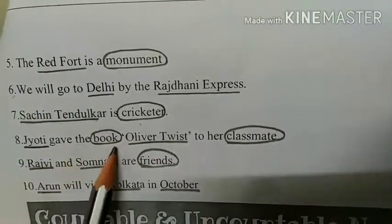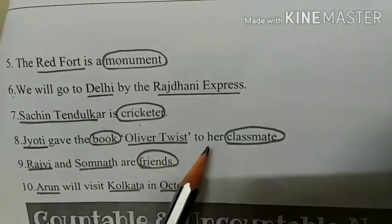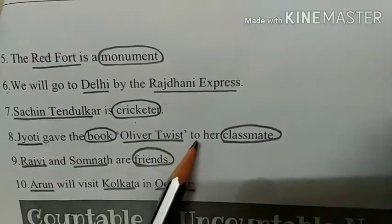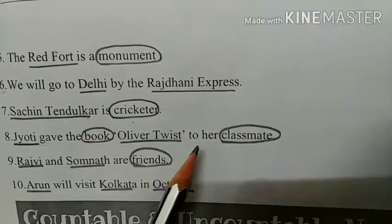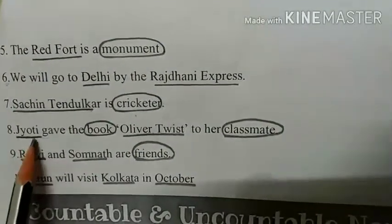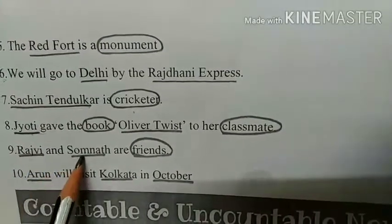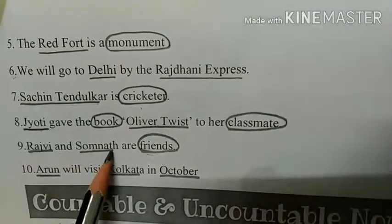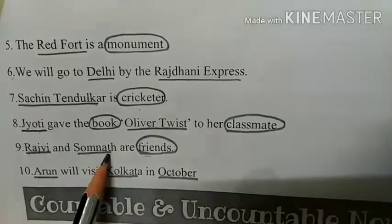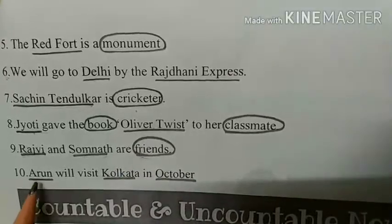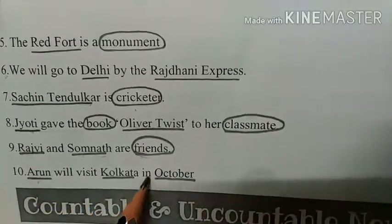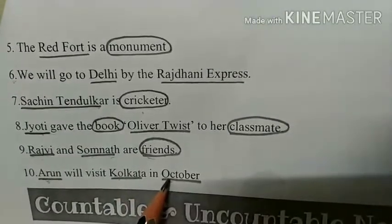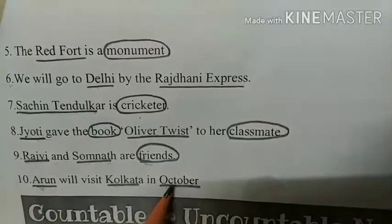Come to the eighth question: 'Jyoti gave the book Oliver Twist to her classmate.' Underline Jyoti, circle book, underline Oliver Twist, and circle classmate. Book and classmate are common names, whereas Oliver Twist and Jyoti are proper names. Ninth question: 'Rajvi and Somnath are friends.' Rajvi and Somnath are proper names — they are special names of persons. Friend is a common name. Last question: 'Arun will visit Kolkata in October.' Underline Arun, Kolkata, and October — in this sentence all the nouns are proper nouns.